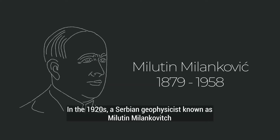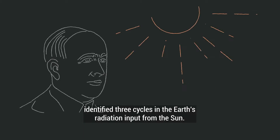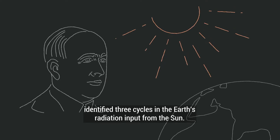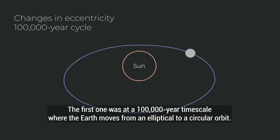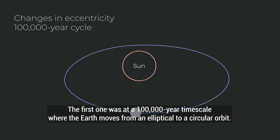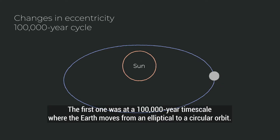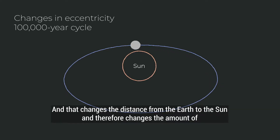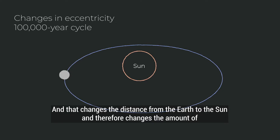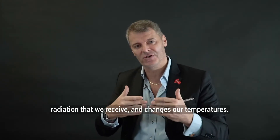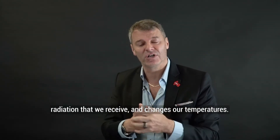In the 1920s, a Serbian geophysicist known as Milutin Milankovitch identified three cycles in the Earth's radiation input from the Sun. The first was at 100,000-year timescales, where the Earth moves from an elliptical to a circular orbit. That changes the distance from the Earth to the Sun and therefore changes the amount of radiation we receive and changes our temperatures.